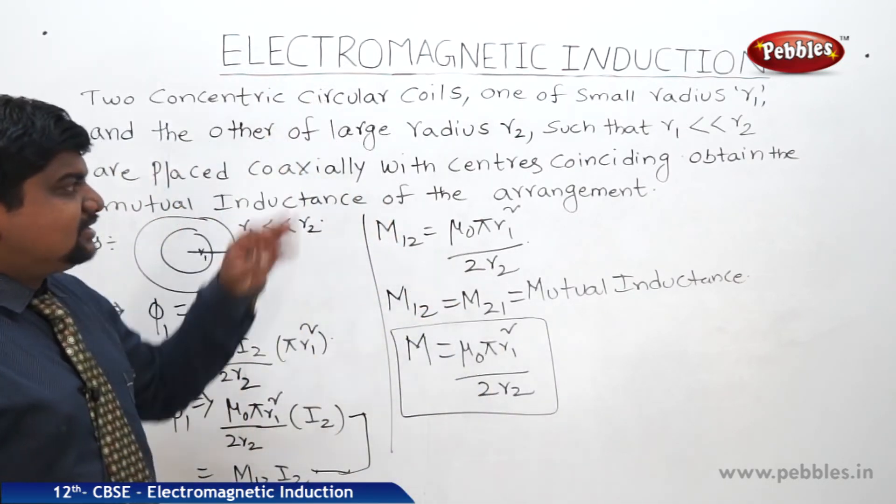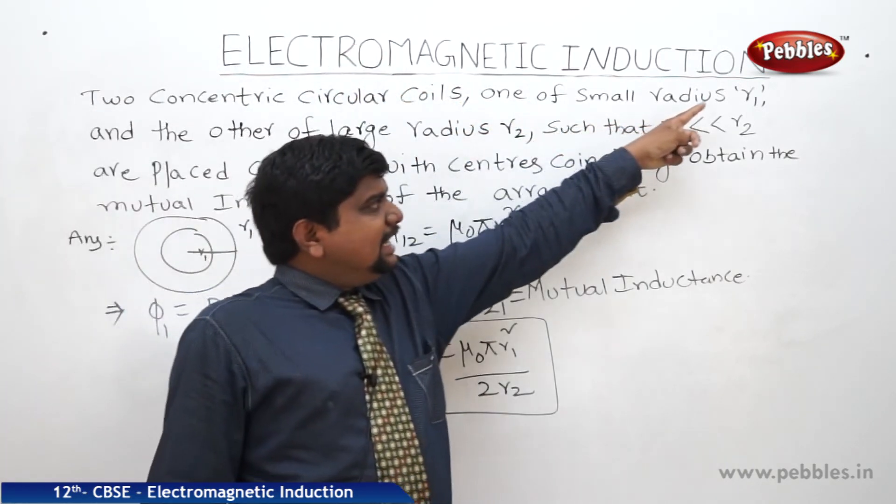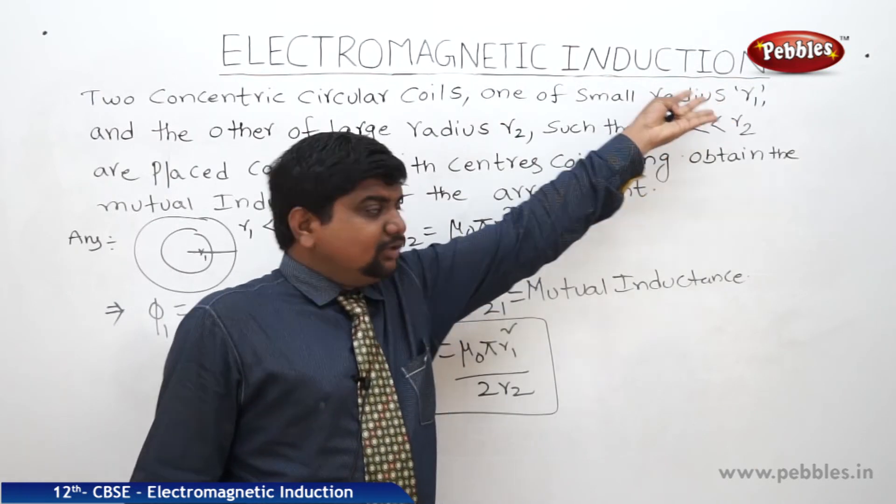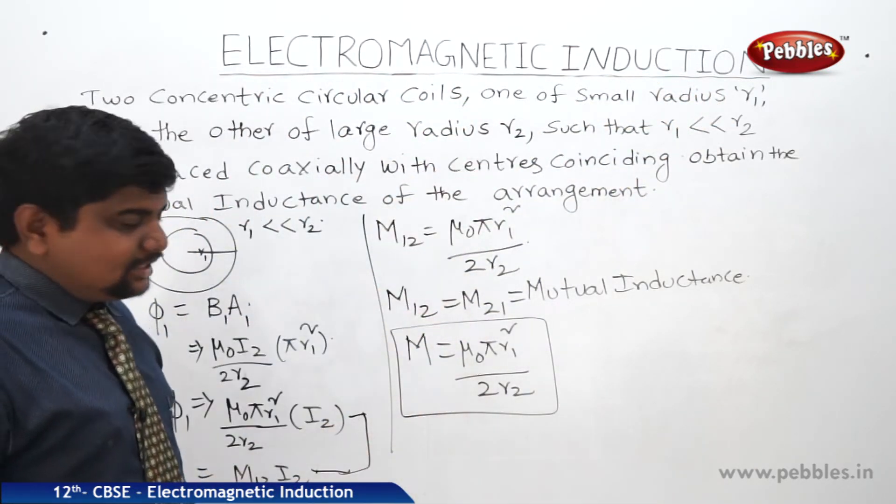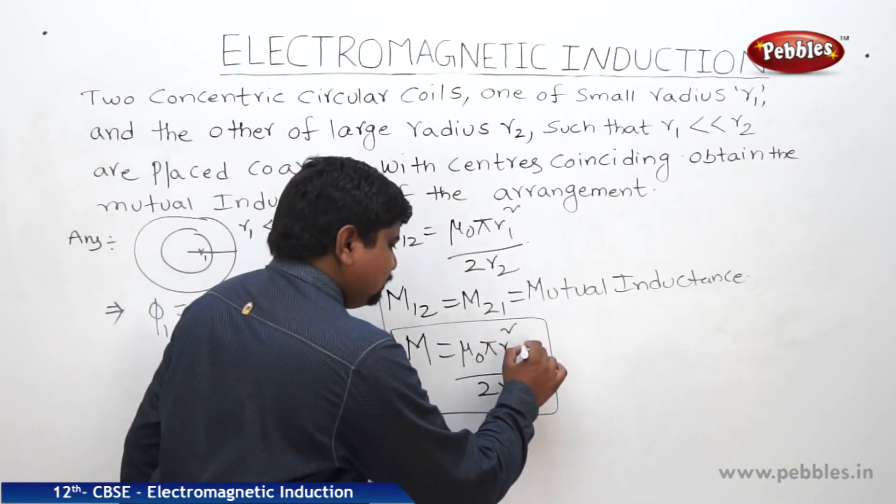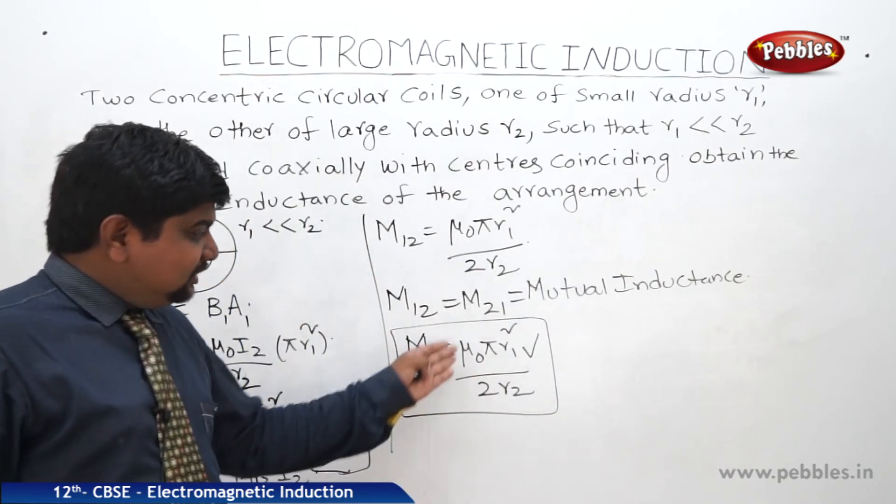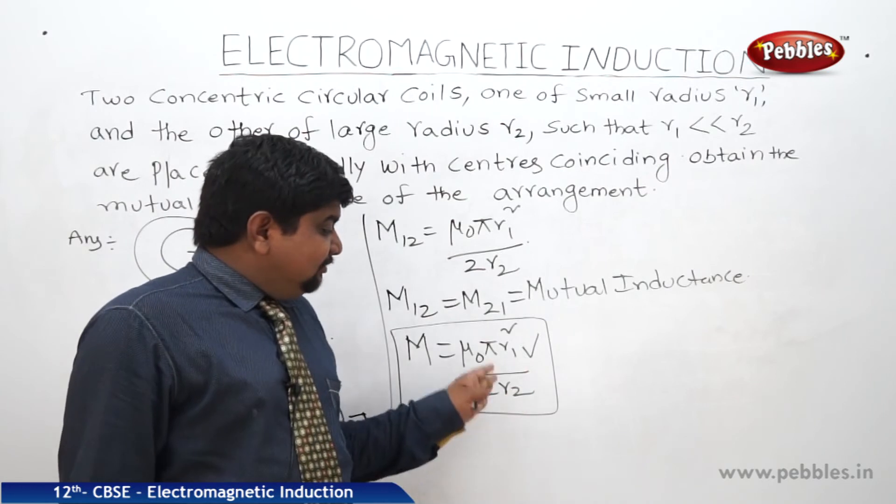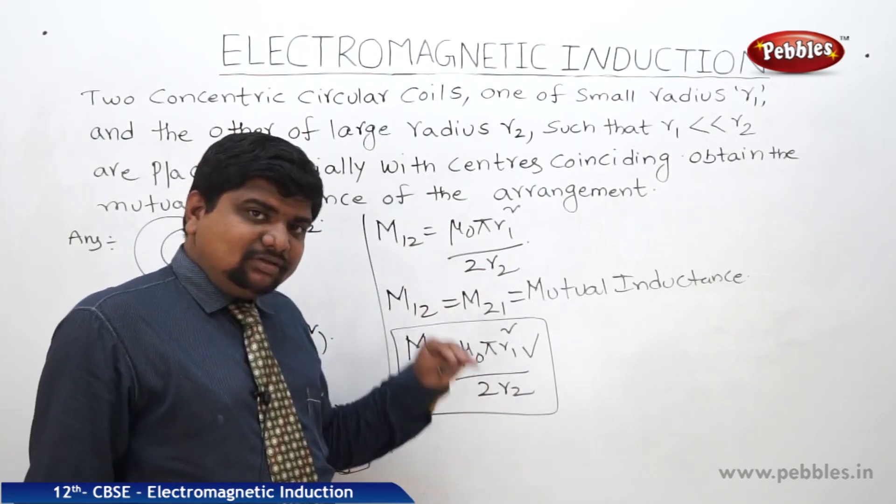This is the final expression of this type of problem. In the same type of problem they will give the radius R1 with one particular value and they will give the remaining values also. They will ask to find out what is the mutual inductance of the system. Then we should remember this formula to simplify the equation in simple way. These type of formulas are very important and work as a shortcut in competitive exams.